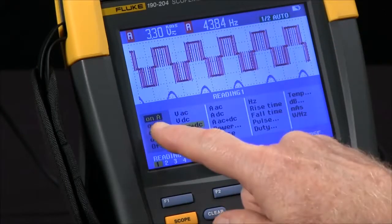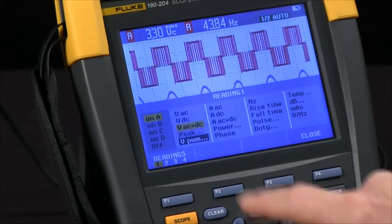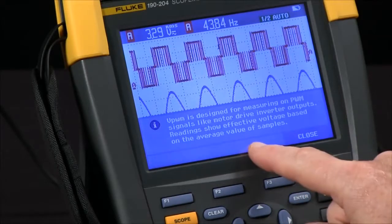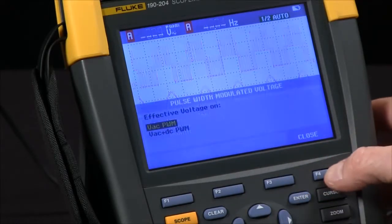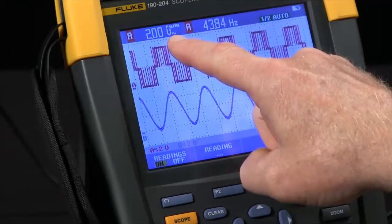I'll use the arrows to move channel A. Highlight VPWM. Hit enter. It describes the measurement for motor drive inverter outputs. I can close that. Close this and see my VPWM measurement now for channel A.